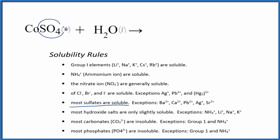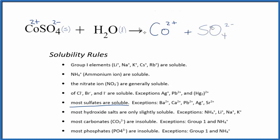The sulfate ion, SO4, is always 2 minus — a good one to remember. That means the cobalt here has to be 2 plus. So we have our cobalt(II) ion and our sulfate ion. Since both of these are dissolved in water, let's put a little 'aq' after them for aqueous, meaning dissolved in water.